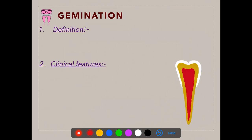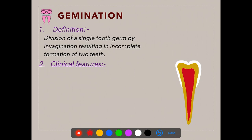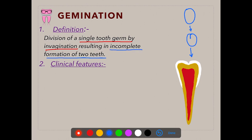Let's start with the first developmental disturbance affecting the shape of the tooth — germination. Its definition: germination is a division of a single tooth germ by invagination resulting in incomplete formation of two teeth. So, a single tooth germ, because of invagination due to external pressure or forces, tends to divide into an incomplete formation of two teeth.